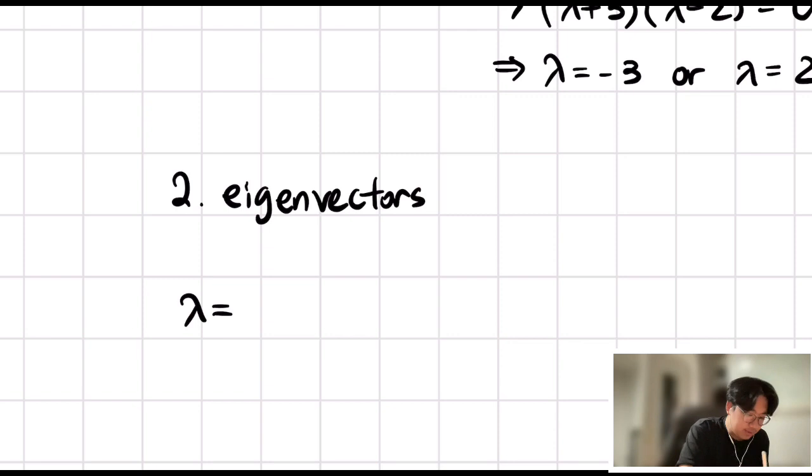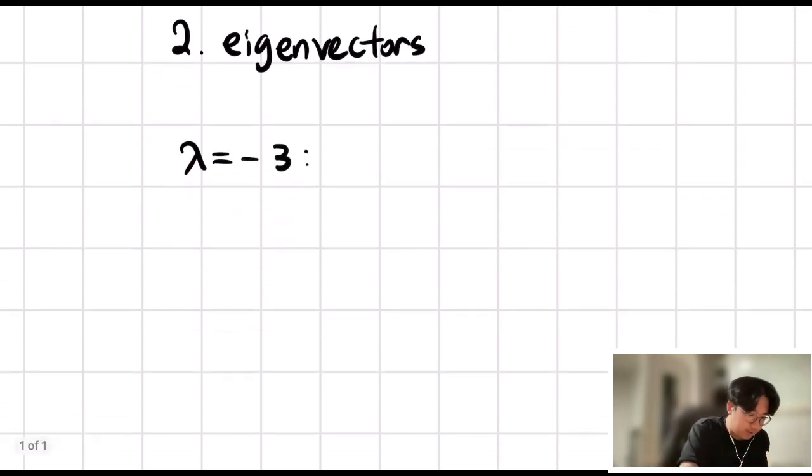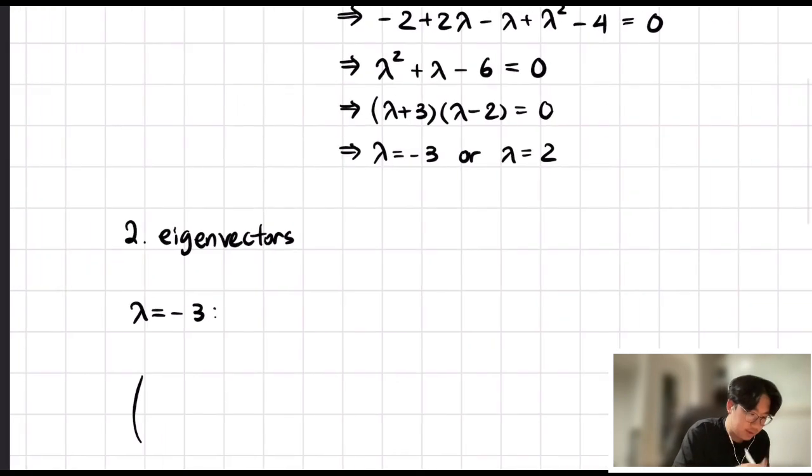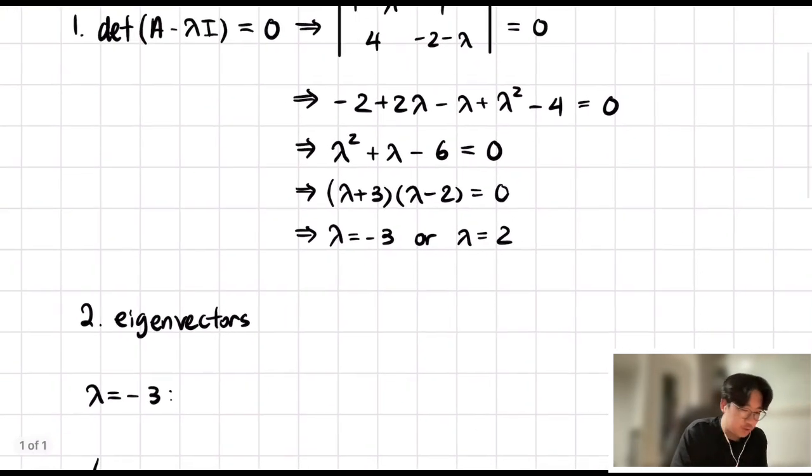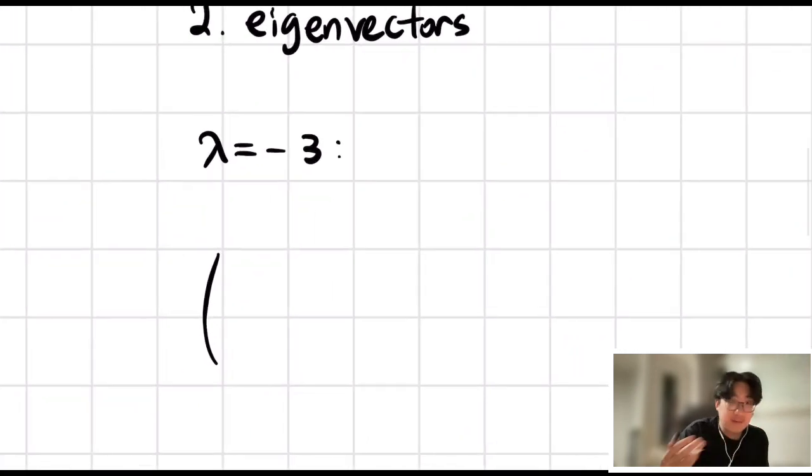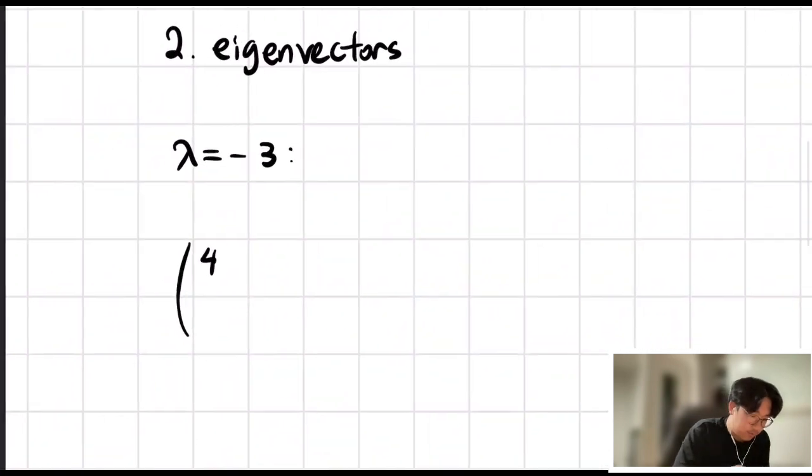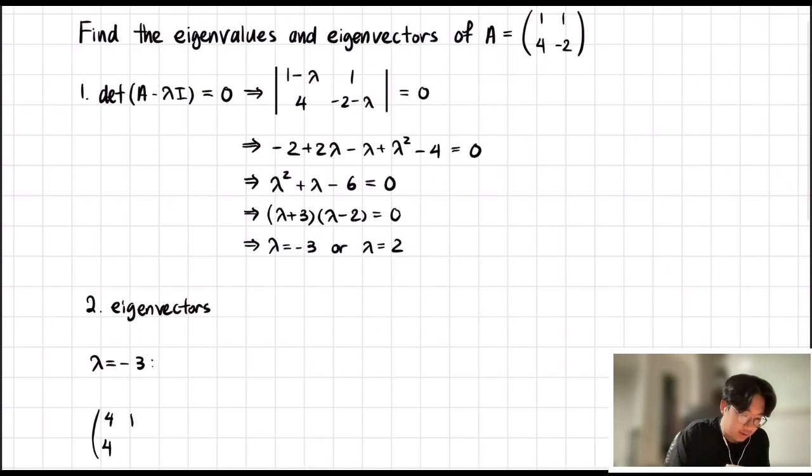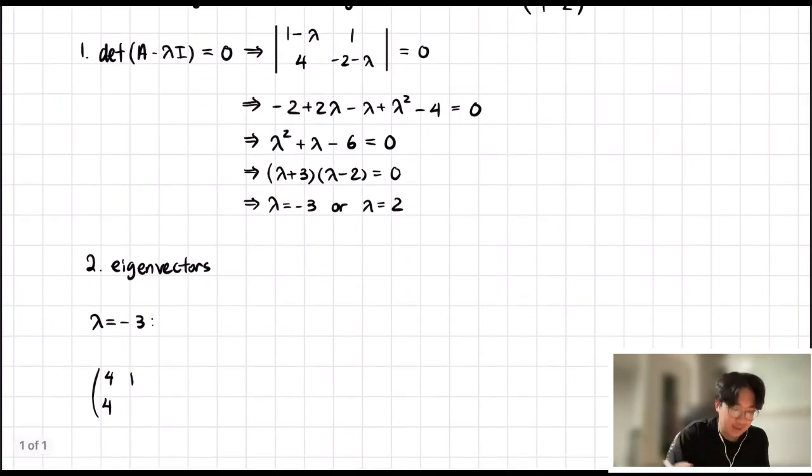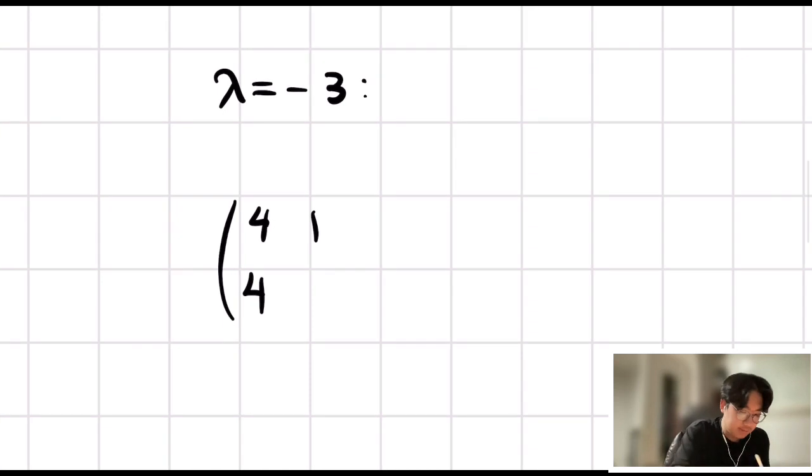λ equal to negative 3. We plug it back into our matrix equation. We have 1 minus λ and negative 2 minus λ. So 1 minus negative 3 gives you 4. Then you have 4 and 1. And then you have negative 2 minus negative 3, so negative 2 plus 3, so another 1.